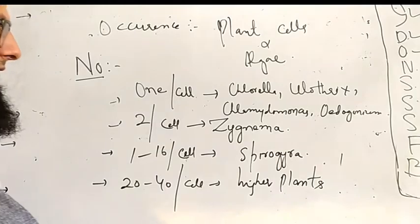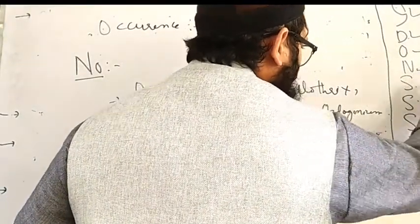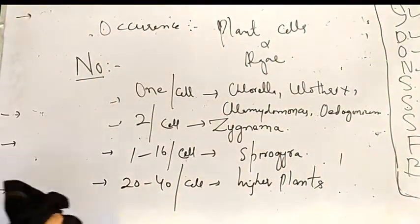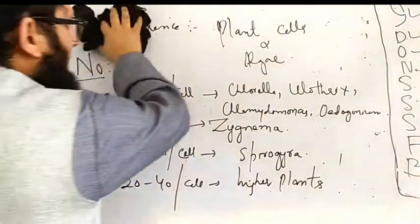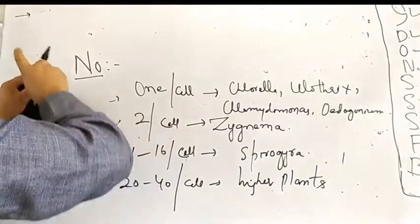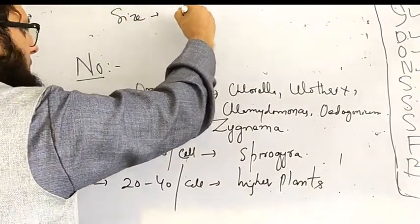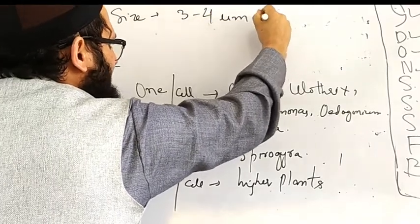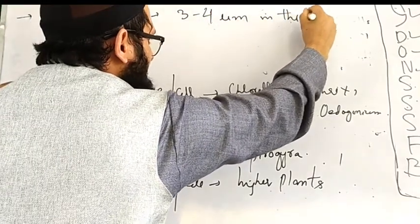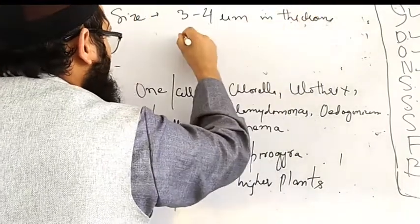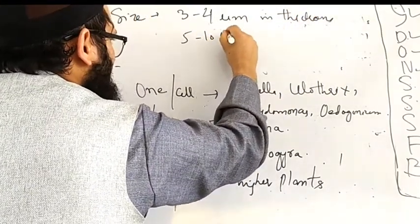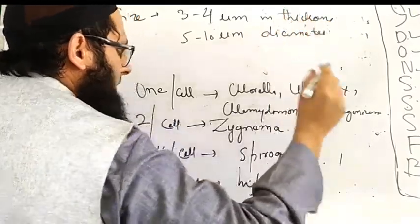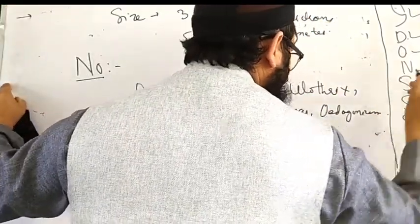Then we have about twenty to forty chloroplasts per cell in case of higher plants. So this is about their number. When we talk about the size, very simple, about three to four micrometers in thickness and five to ten micrometers diameter.